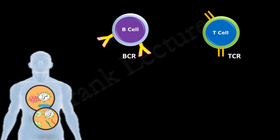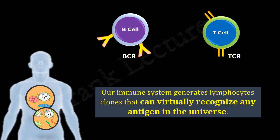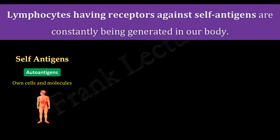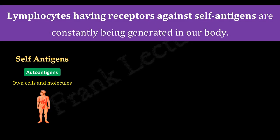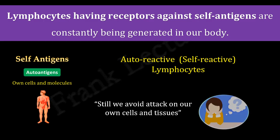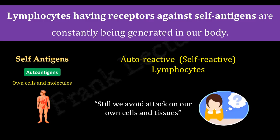An important point to note is that these antigen-specific receptors of B and T cells are generated prior to the encounter of lymphocytes with specific antigens. Our immune system generates lymphocyte clones that can virtually recognize any antigen in the universe. This also means that T and B cells having receptors against self-antigens are also being generated in our body. These lymphocytes are known as auto-reactive or self-reactive lymphocytes. The question is: how do we avoid attack of these self-reactive lymphocytes on our own cells and tissues?